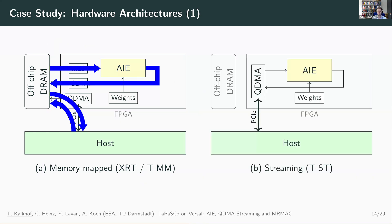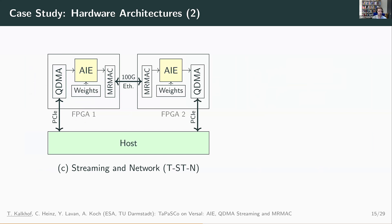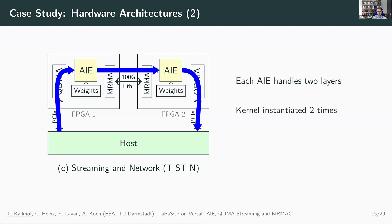In the second version, we use the DMA streaming feature: still on one card, we stream data directly from host memory into the AI engines and the results back to host memory without intermediate copies. In the third version, we combine streaming with two cards and an Ethernet connection — we stream data from host memory into the AI engines, then stream the intermediate results over Ethernet to the second FPGA, and then the results back to host memory. Here each AI engine array handles two layers of our neural network, but we can now instantiate our network two times in parallel.